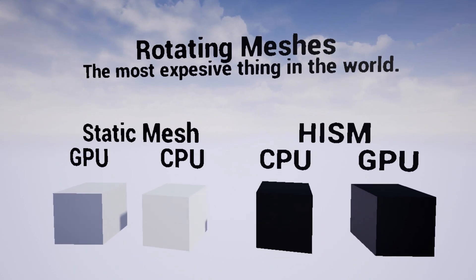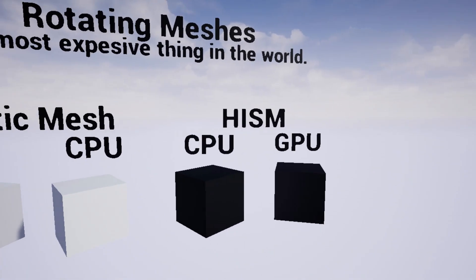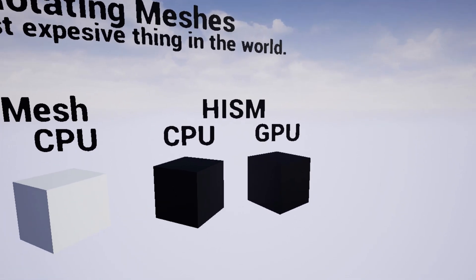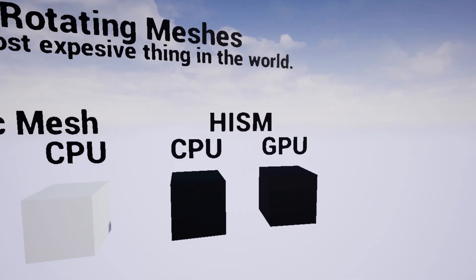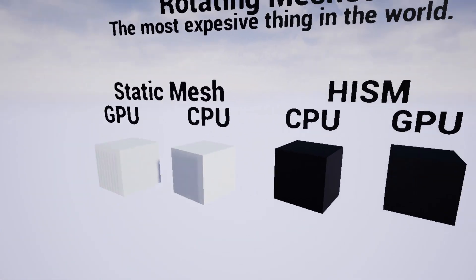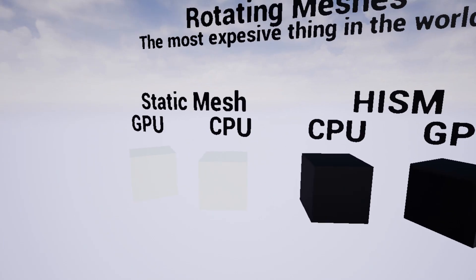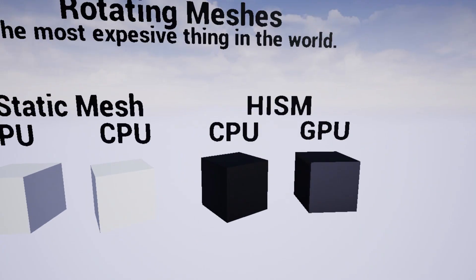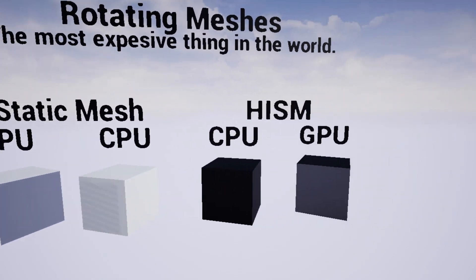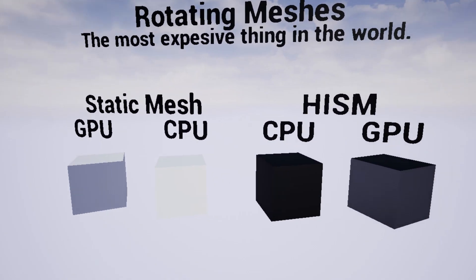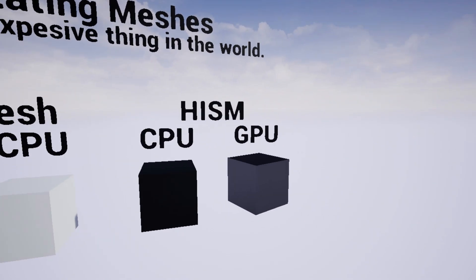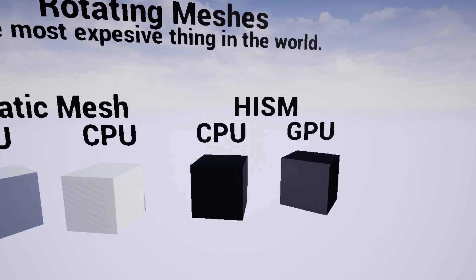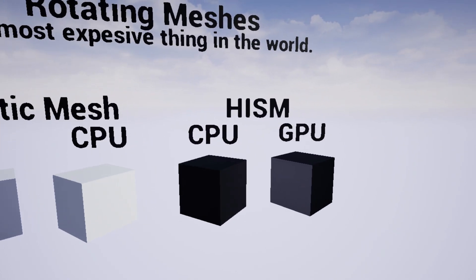As you can see here I have a static mesh and I also have a HISM, a hierarchical instanced static mesh, rotating here all within the view. One's being done on the CPU, one's being done on the GPU, and you want to opt for the one on the GPU if you can in every case because it's just a lot better.